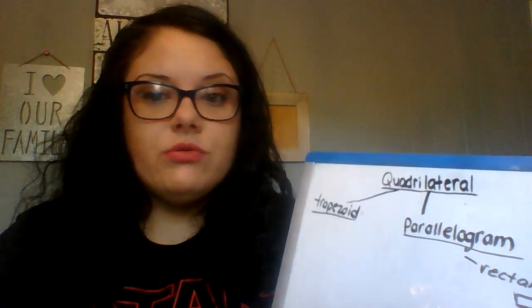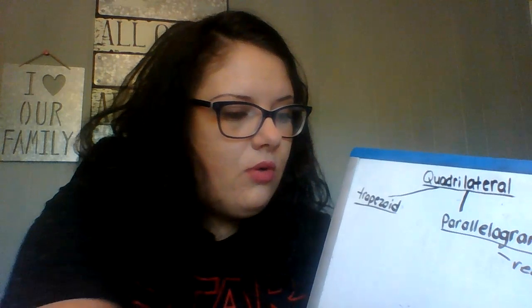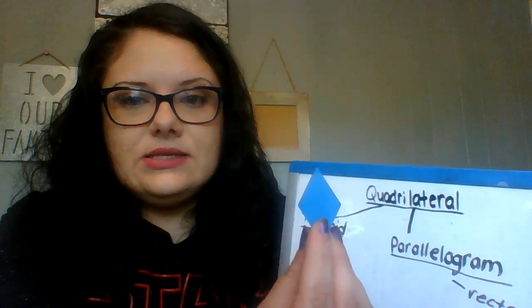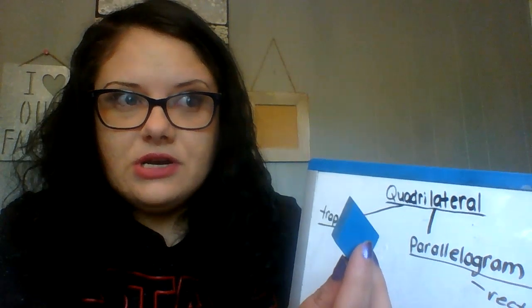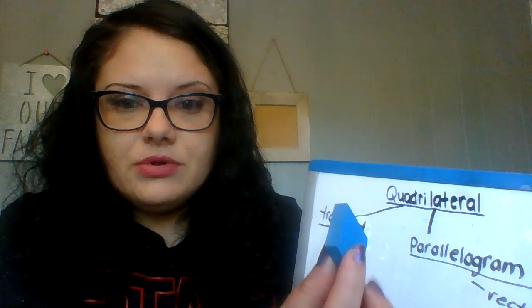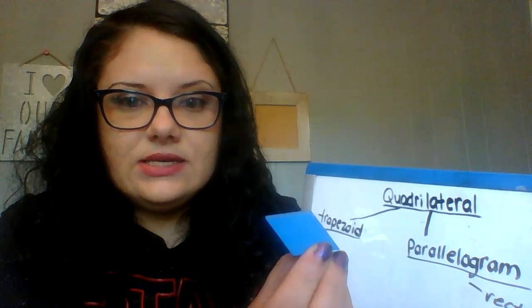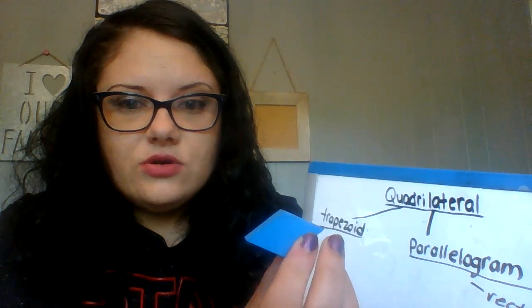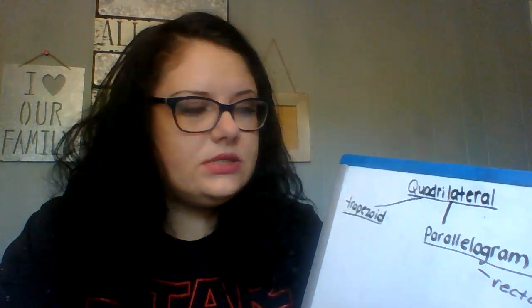We're also going to look at this shape. This is not a diamond — a diamond is a three-dimensional shape. And it's not a slanted square. What do we call this? It is a rhombus.